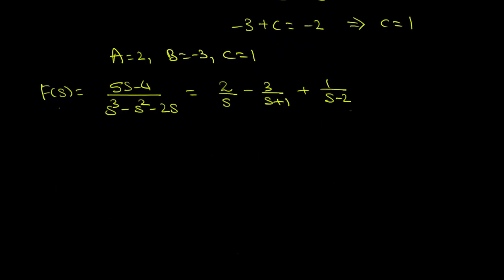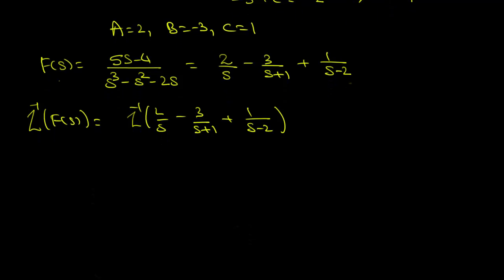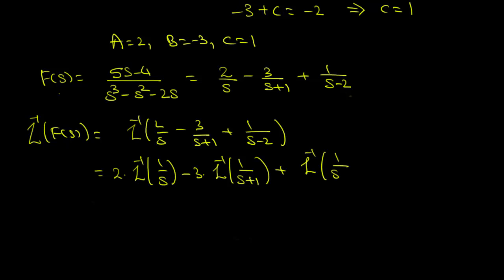Applying the inverse Laplace transform to f(s), we have the inverse Laplace of f(s) equals the inverse Laplace of 2 over s, minus 3 over (s plus 1), plus 1 over (s minus 2). Since the inverse Laplace transform is linear, this equals 2 times the inverse Laplace of 1 over s, minus 3 times the inverse Laplace of 1 over (s plus 1), plus the inverse Laplace of 1 over (s minus 2).